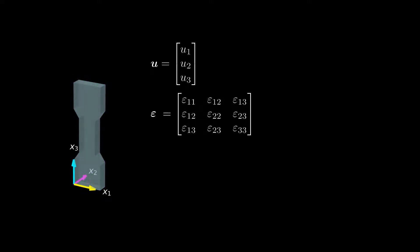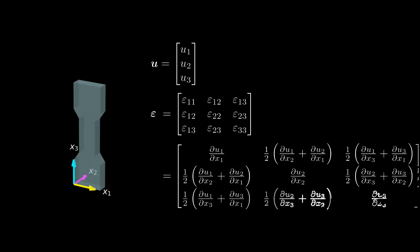The strain tensor is the symmetric part of the gradient of the displacement field. Because it is symmetric, the strain tensor has a total of six independent components. First, let's see if we can visualize these six components at a single point in matter.